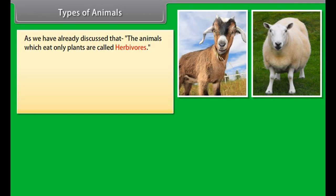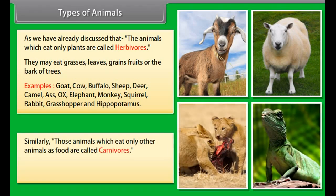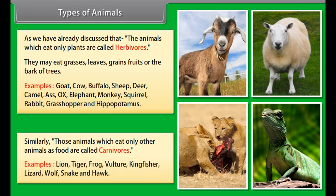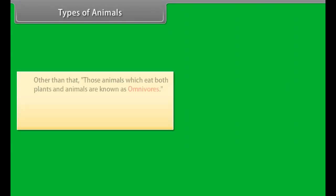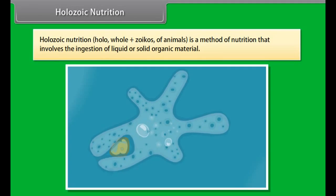All animals can be divided into three groups on the basis of their food habits: herbivores, carnivores, and omnivores. Animals which eat only plants are called herbivores — they eat grasses, leaves, grains, fruits, or bark of trees. Examples include goat, cow, buffalo, sheep, deer, camel, elephant, rabbit, and grasshopper. Animals which eat only other animals are called carnivores — examples include lion, tiger, frog, vulture, snake, and hawk.